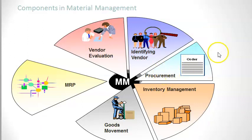When we talk about procurement, it does not cover just the procuring of materials. When a requirement triggers, right from creation of requisition to sending the purchase order to the vendor, it is taken care of by the procurement department. This involves creation of requisition, approval of requisition, creation of Request for Quotation if needed, converting of requisition to purchase order, identifying the medium to send the purchase order to the vendor, and PO monitoring.